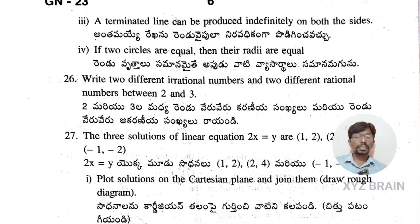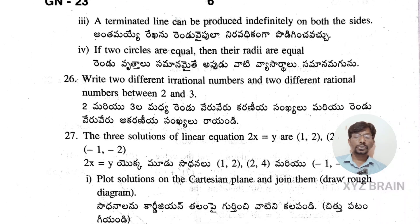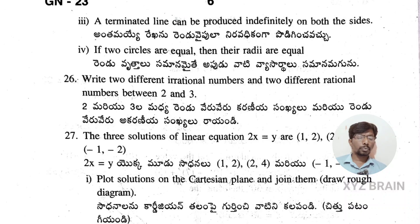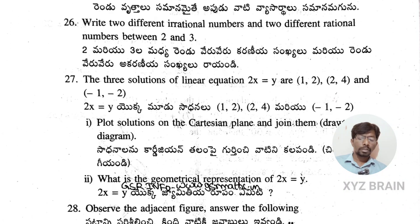Question 26: write two different irrational numbers and two different rational numbers between 2 and 3. Question 27: are (1, 2), (2, 4), and (-1, -2) solutions of the linear equation 2x = y? Question 28: observe the adjacent figure and answer the following questions.